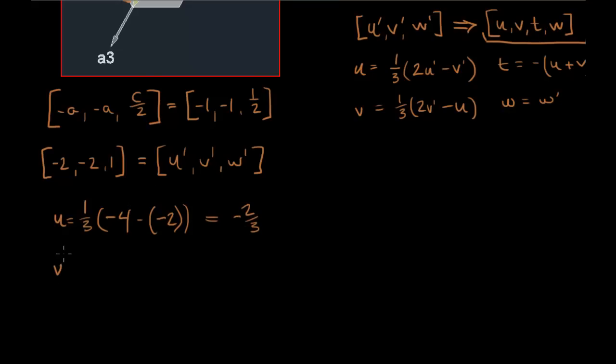V prime, or V, equals 1 third of 2 times V prime, which is exactly the same. And if you do this out, you'll see that you get the exact same values. So this one will also equal negative 2 thirds.